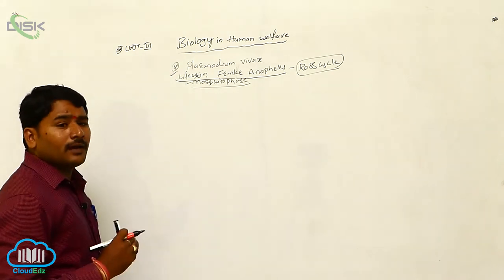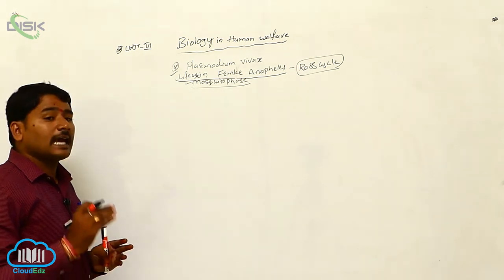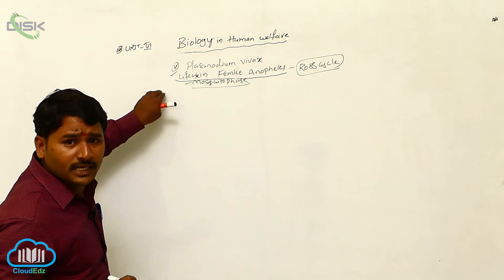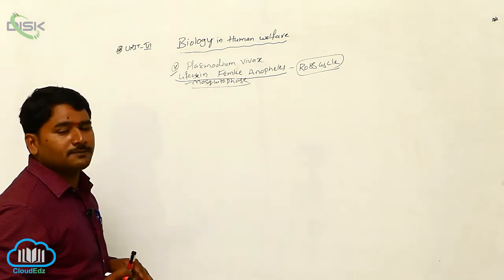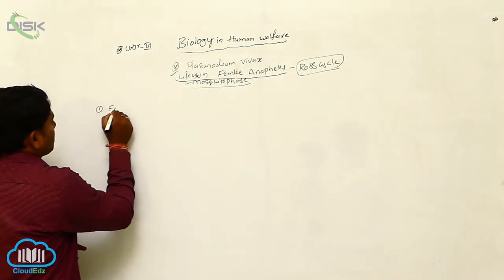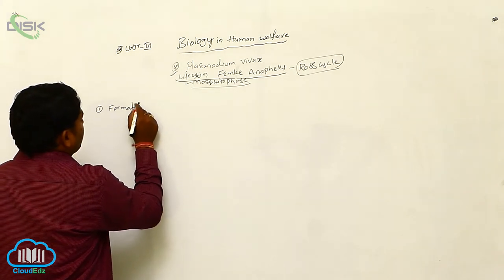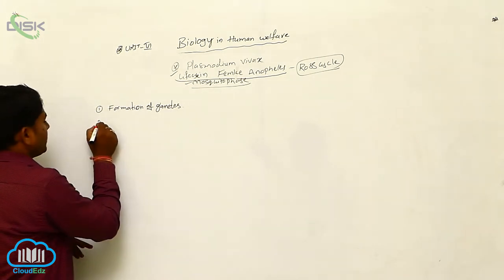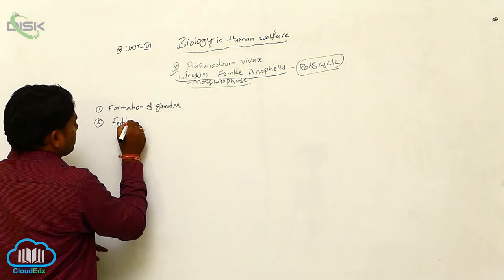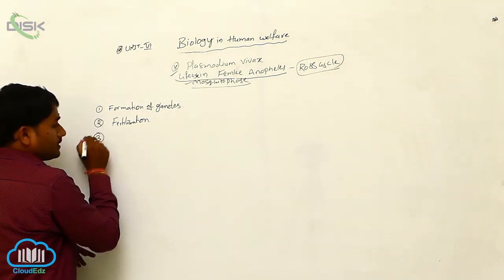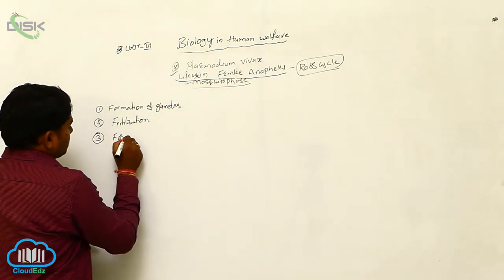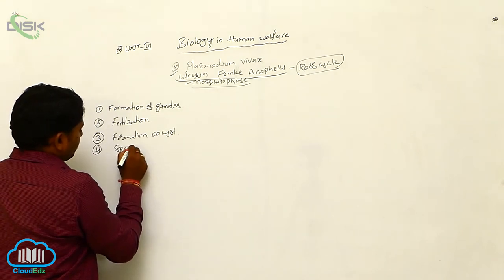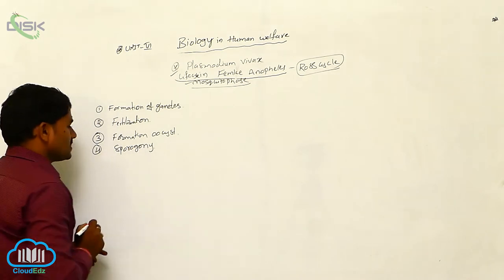When a mosquito bites a human being, gametocytes will enter into the mosquito. The life cycle of Plasmodium vivax in the female Anopheles mosquito has four stages: first, formation of gametes; second, fertilization; third, formation of oocyst; and fourth, sporogony.